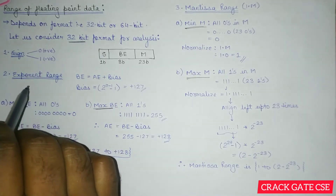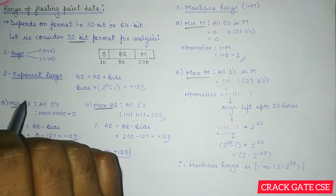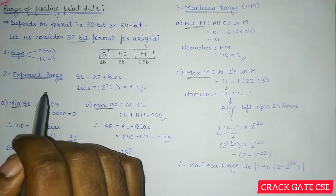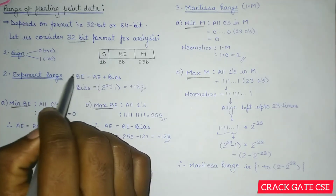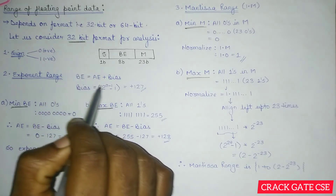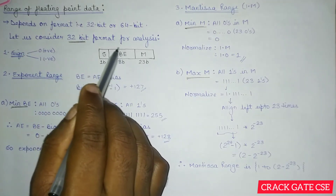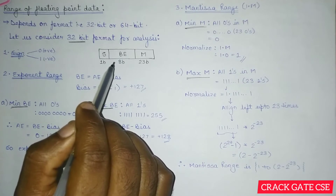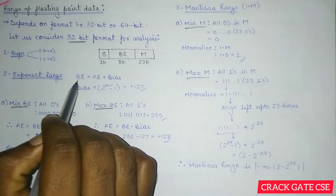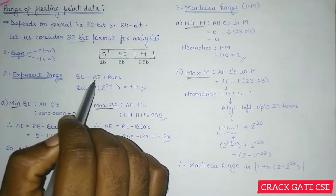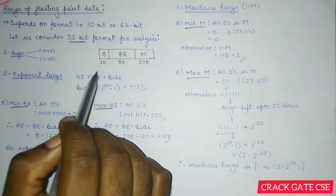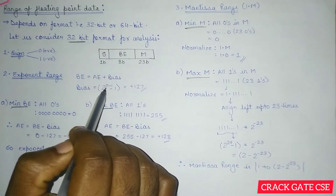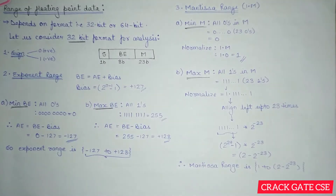The exponent is important because we need to find out the actual exponent values. The biased exponent bits are used to find the actual exponent using the formula: biased exponent = actual exponent + bias. The bias is calculated as 2^(n-1) - 1, where n = 8, giving us a bias of 127.